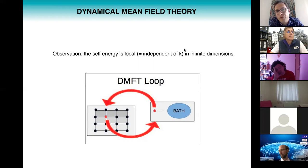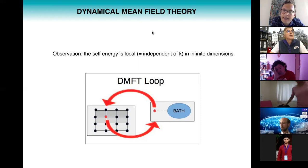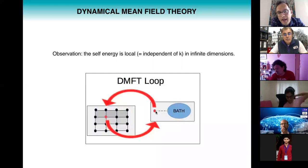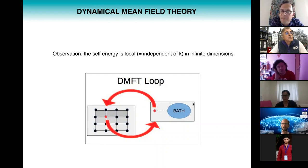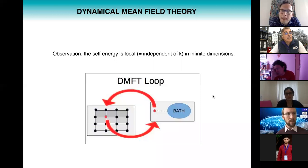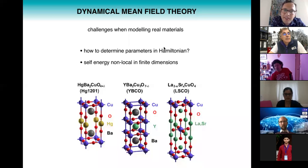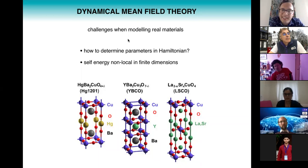The locality of the self-energy in infinite dimensions allows us to map an atom in a crystal onto an atom interacting with a bath of non-interacting electrons — the Anderson impurity model — which can be solved very accurately with quantum Monte Carlo. DMFT is an elegant theory that allows quite accurate solution of the Hubbard model. But we want to understand real materials, not just the Hubbard model, which raises the question of how to parametrize the Hamiltonian — how to determine t and U.